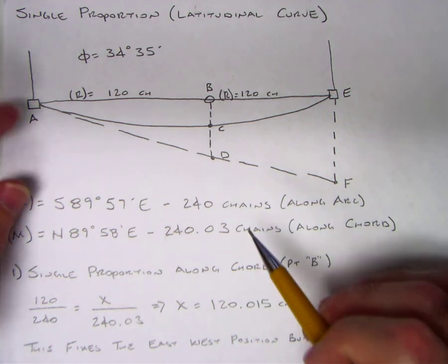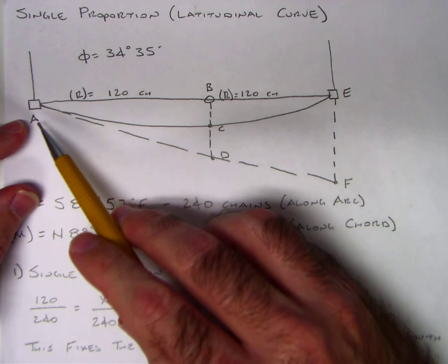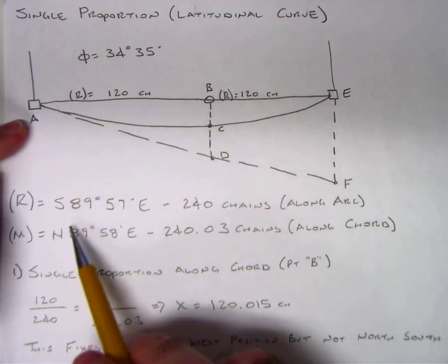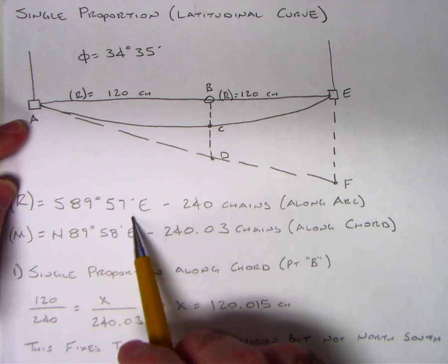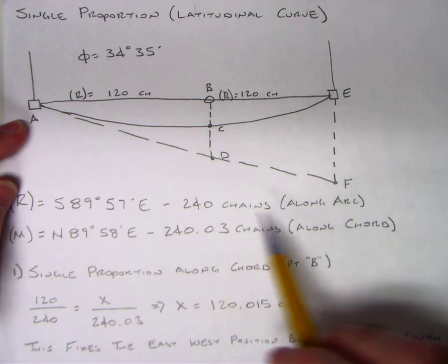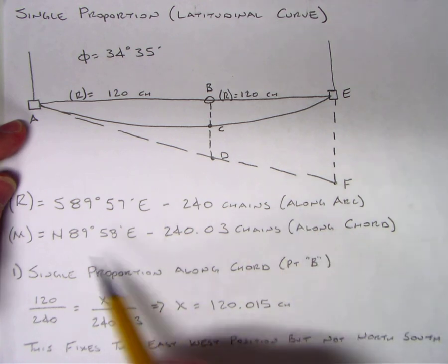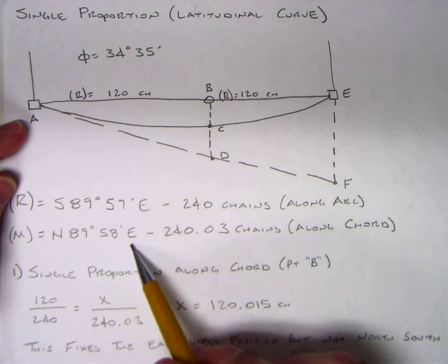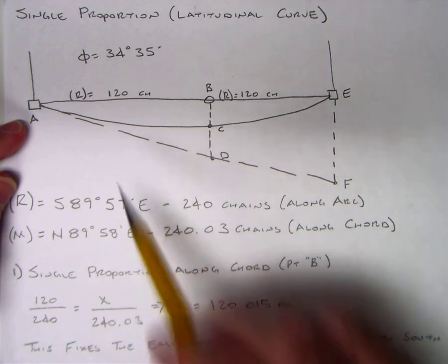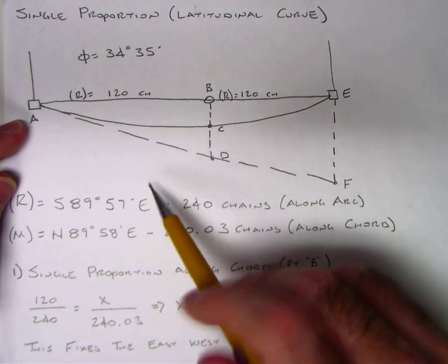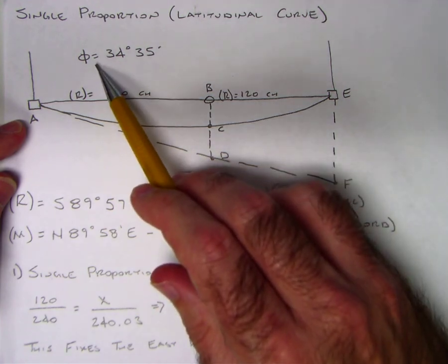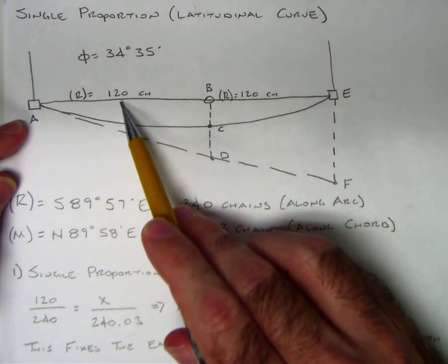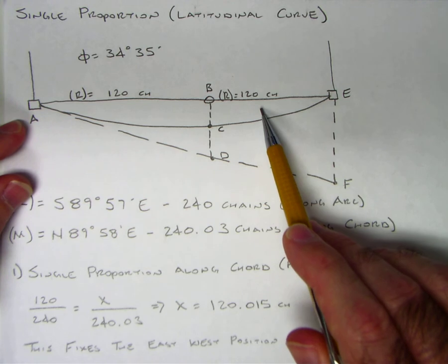In the record we have south 89 degrees 57 minutes east 240 chains along the arc. Then we measure north 89 degrees 58 minutes east 240.03 chains along the chord. We're at a mean latitude of 34 degrees 35 minutes, and in the record we have 120 chains and 120 chains.